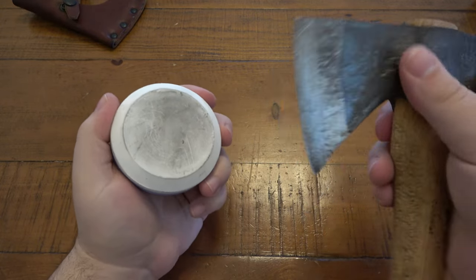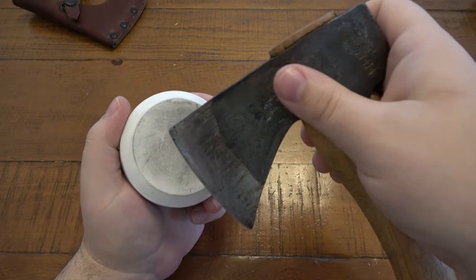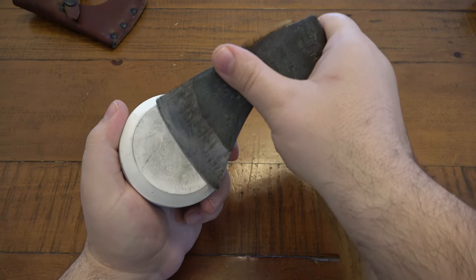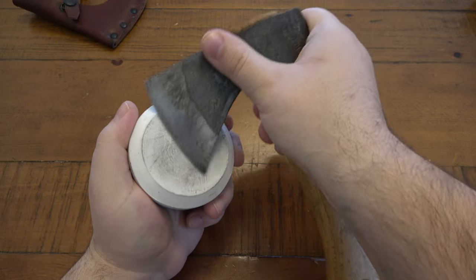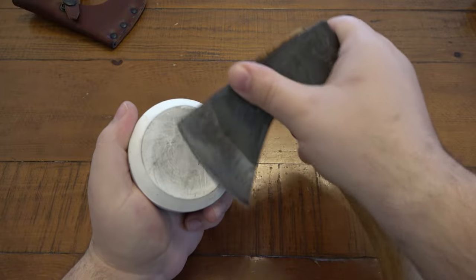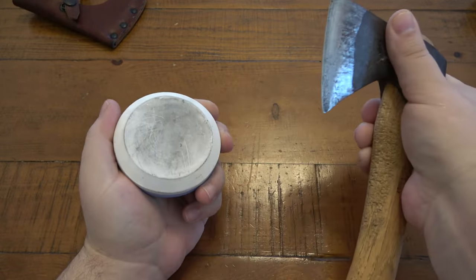Hold it firm in your off hand. With whatever hand is more controllable, hold your hatchet or axe and sharpen it on the stone. You just want to go in circles. Some people start at the heel and do one swipe like a regular knife. More often than not, circles are fine. People do big circles or tight little circles - it doesn't really matter.